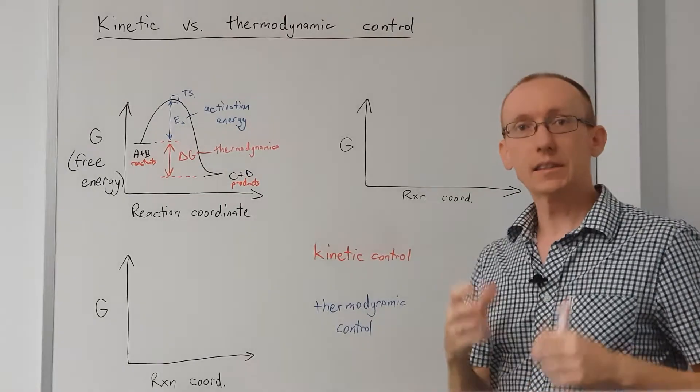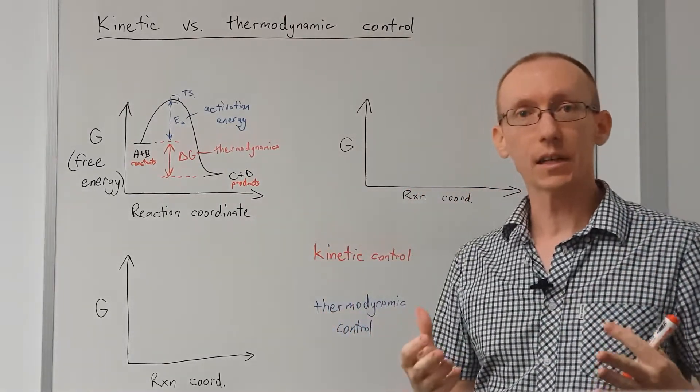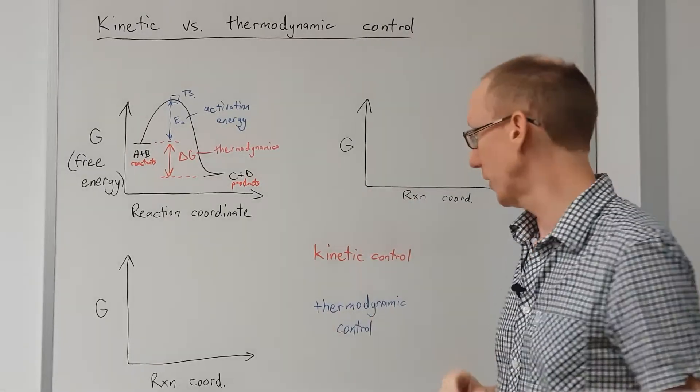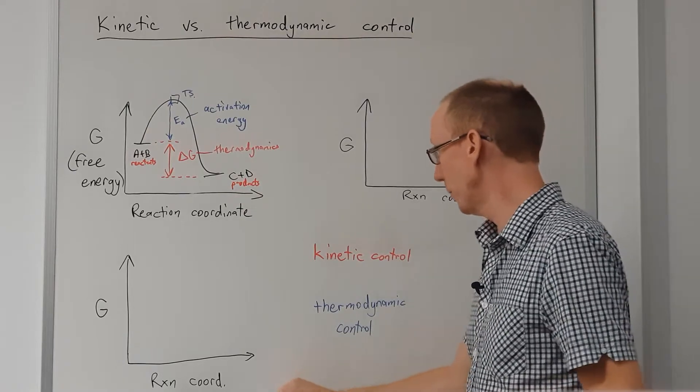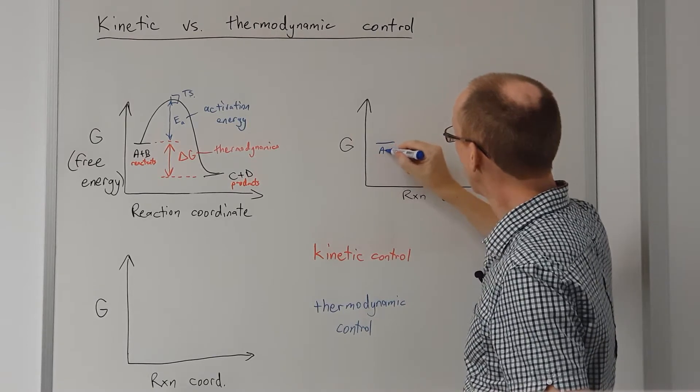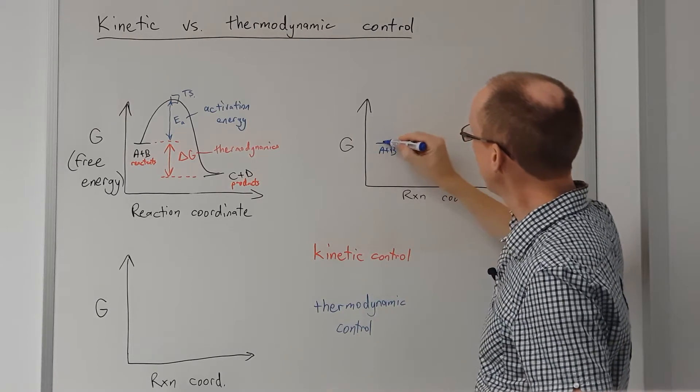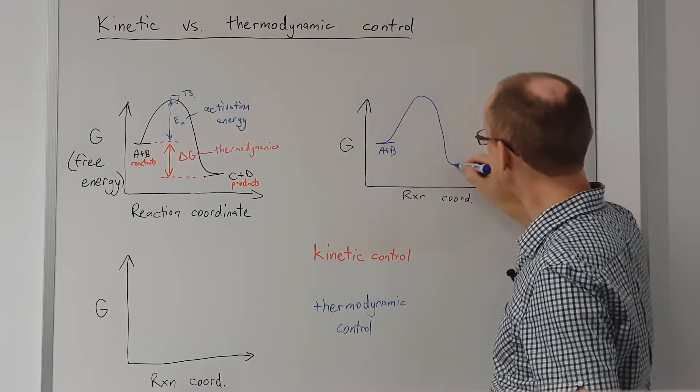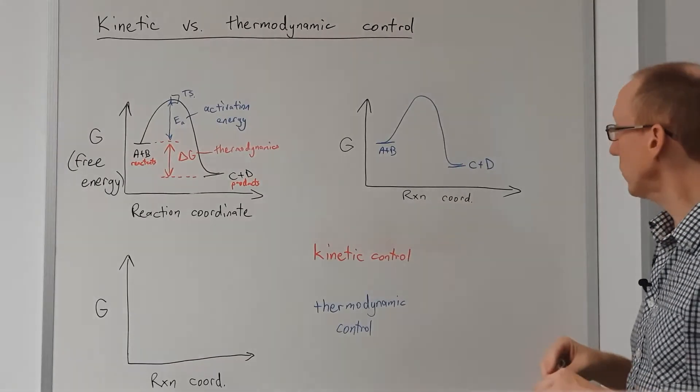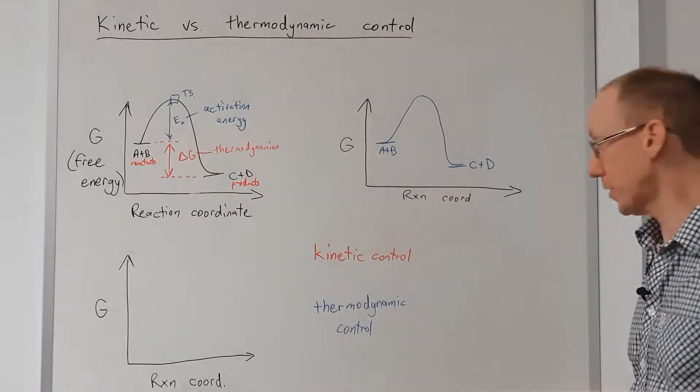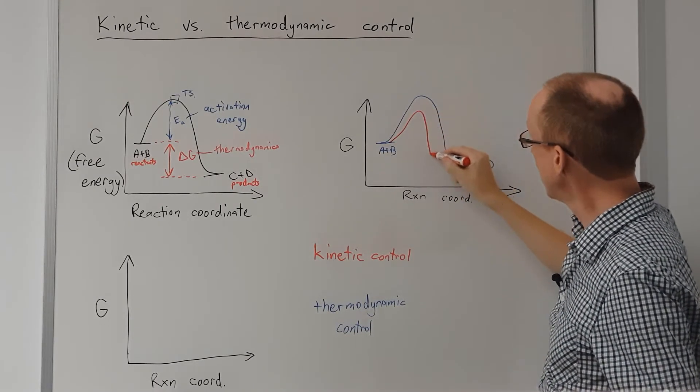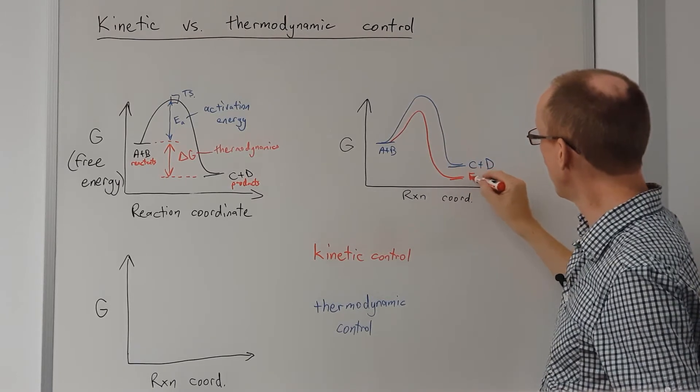Now if we have a set of reactants that can react in a couple of different ways to give more than one set of products, then we can have different energy profiles for those two different types of reactions. So if we have, first off, A plus B going through a transition state down to products C plus D, that could be one reaction profile. But we may have a different one where we have A plus B going through a different transition state to give a different set of products at a different energy level.